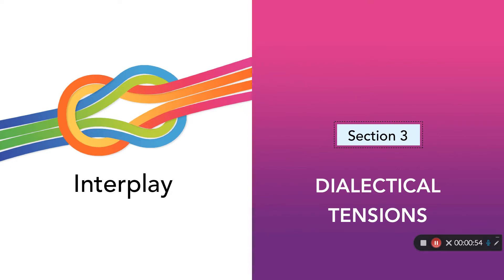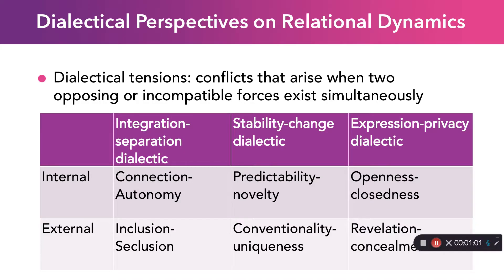Now we're going to look at another way of looking at relationships and the dynamics of a relationship. It's a little more challenging but ultimately more useful, and it's called dialectical tensions. The idea is that at any point in a relationship — whether it's new, five years old, or fifty years old, whether it's in an integrating stage or more circumscribing — there are two opposing forces that exist at the same time. This can be an internal dialectical tension, between the two people in the relationship, or an external one, between the people in the relationship and the outside world.